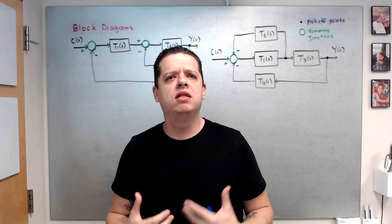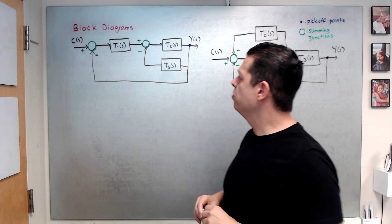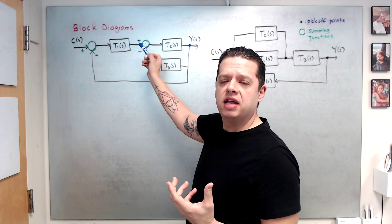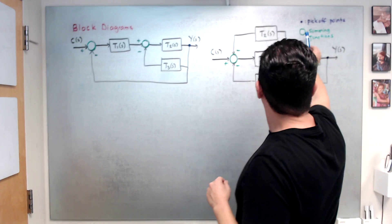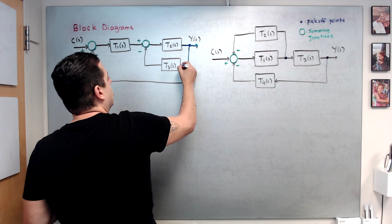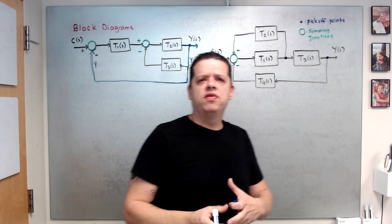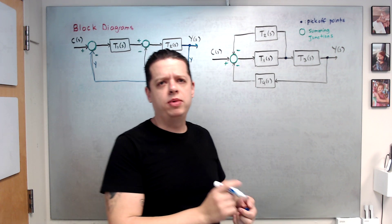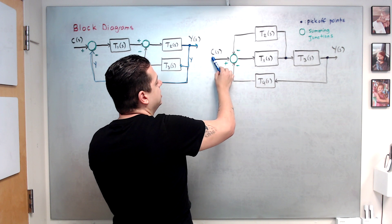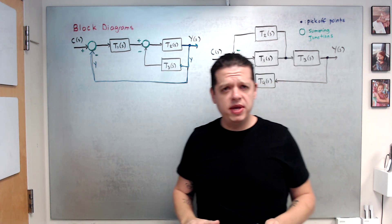Still, as control engineers we would like to understand how the closed-loop system transfer function is computed when you have a block diagram. First: block diagram nomenclature. Here you have arrows which indicate how signals are transmitted. The purple dots indicate pick-off points — if this is Y(s), then the signals coming off that point are also Y(s). Summing junctions combine signals; for example, this line represents this signal minus this signal minus this signal.